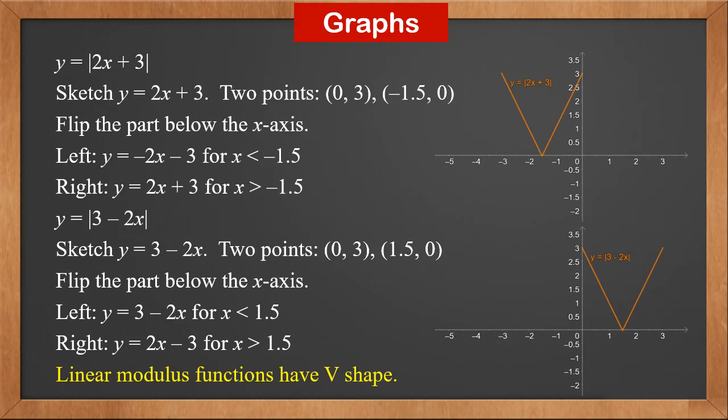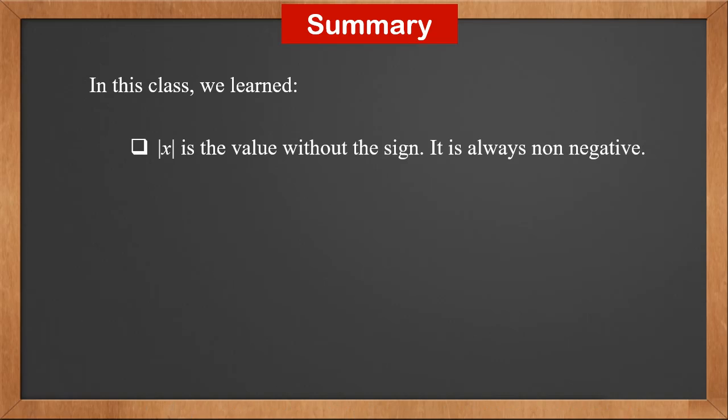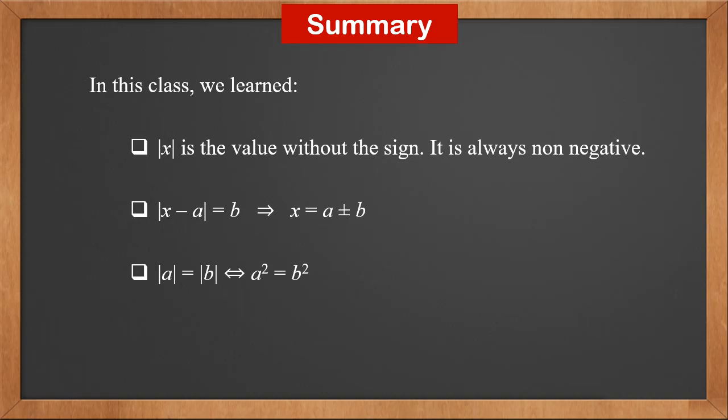All linear modulus functions have a V-shape. In this class, we learned: |x| is the value without the sign — it is always non-negative. If |x − a| = b, then x = a ± b. |a| = |b| is equivalent to a² = b². Linear modulus functions have a V-shape.